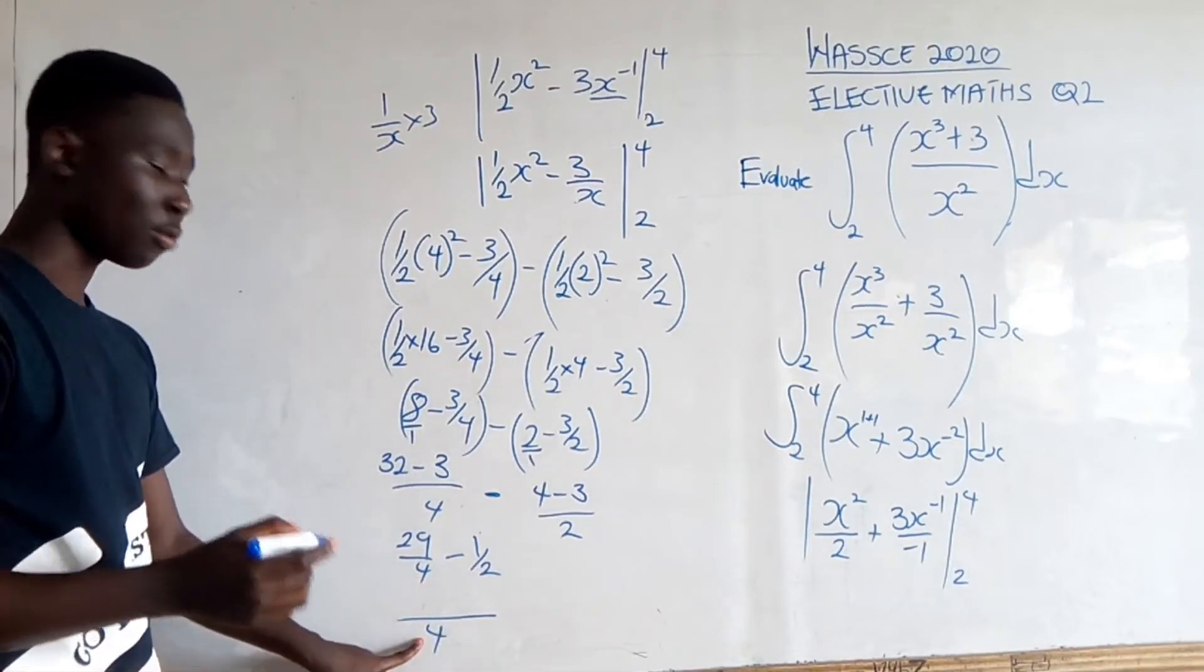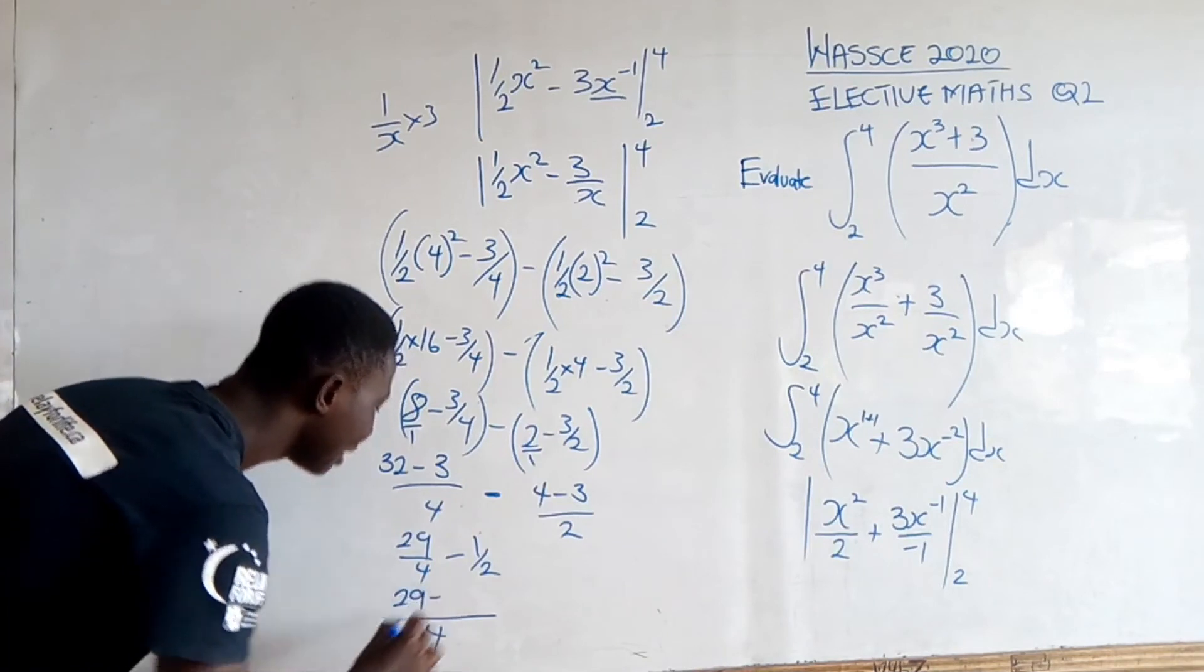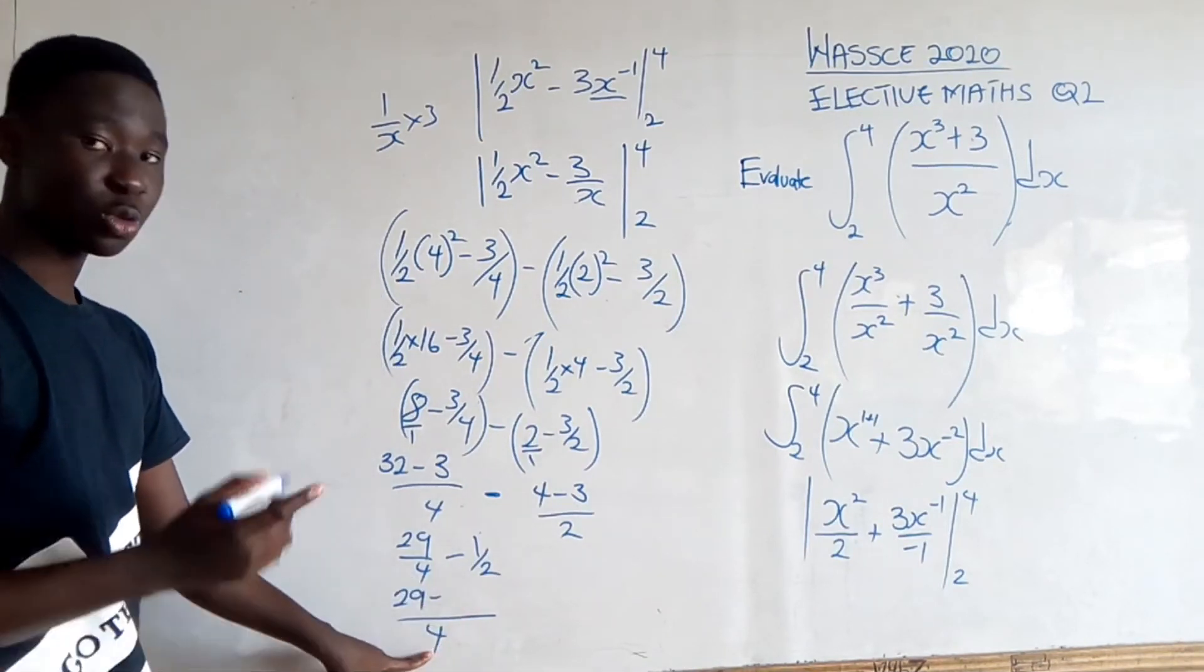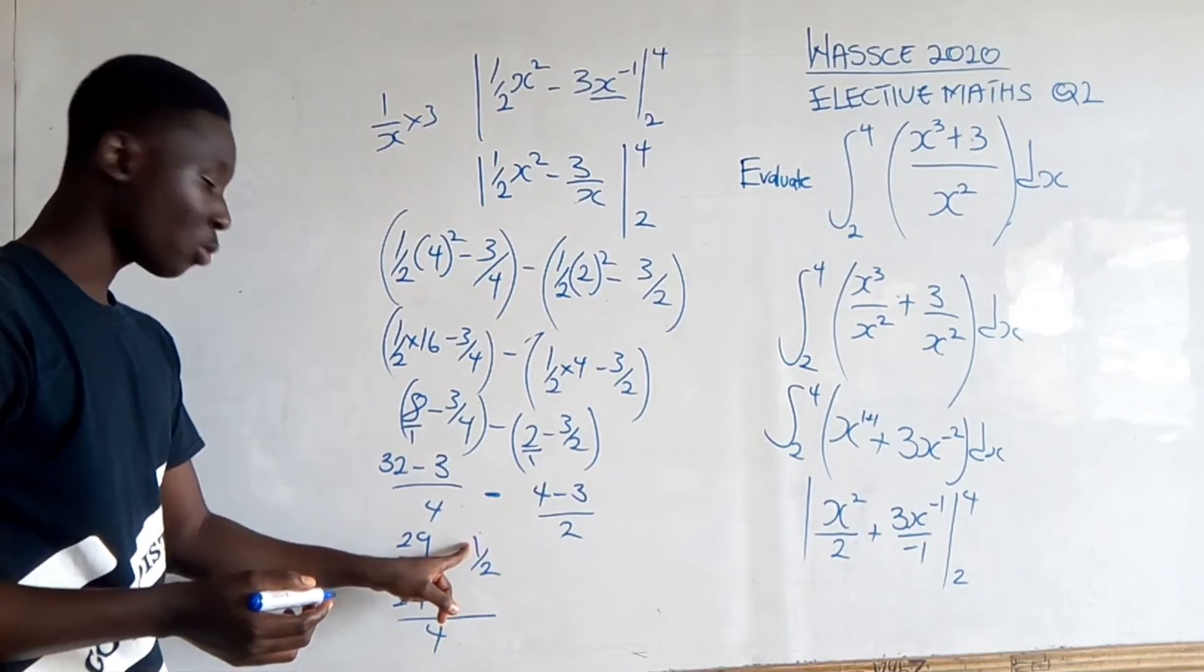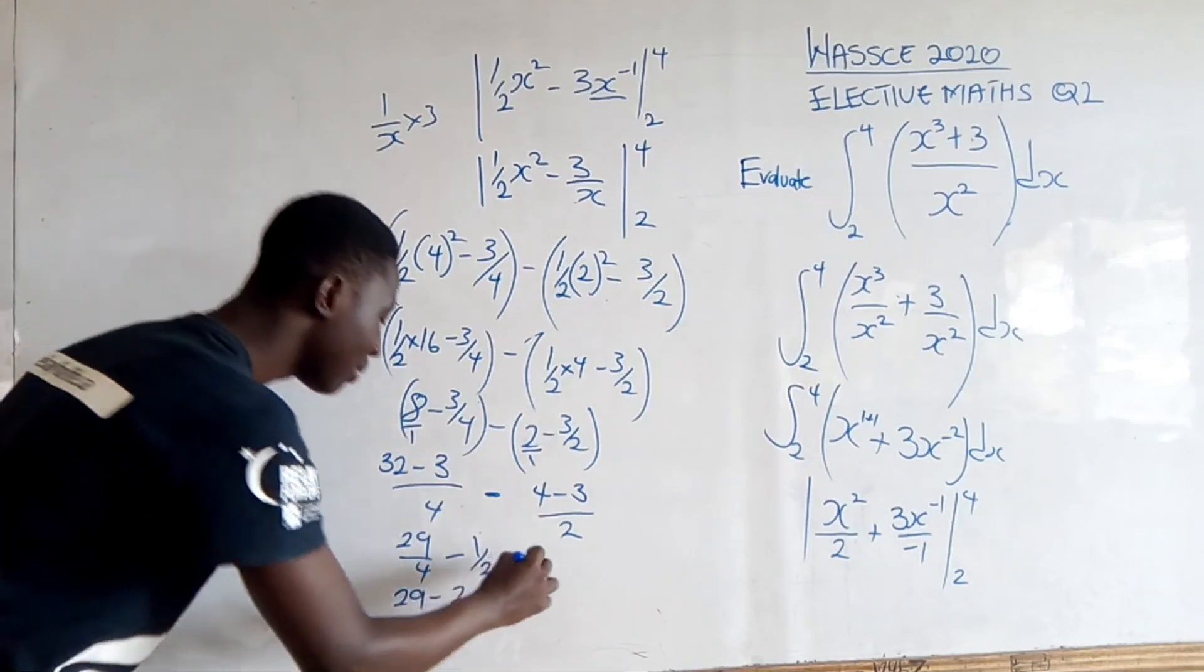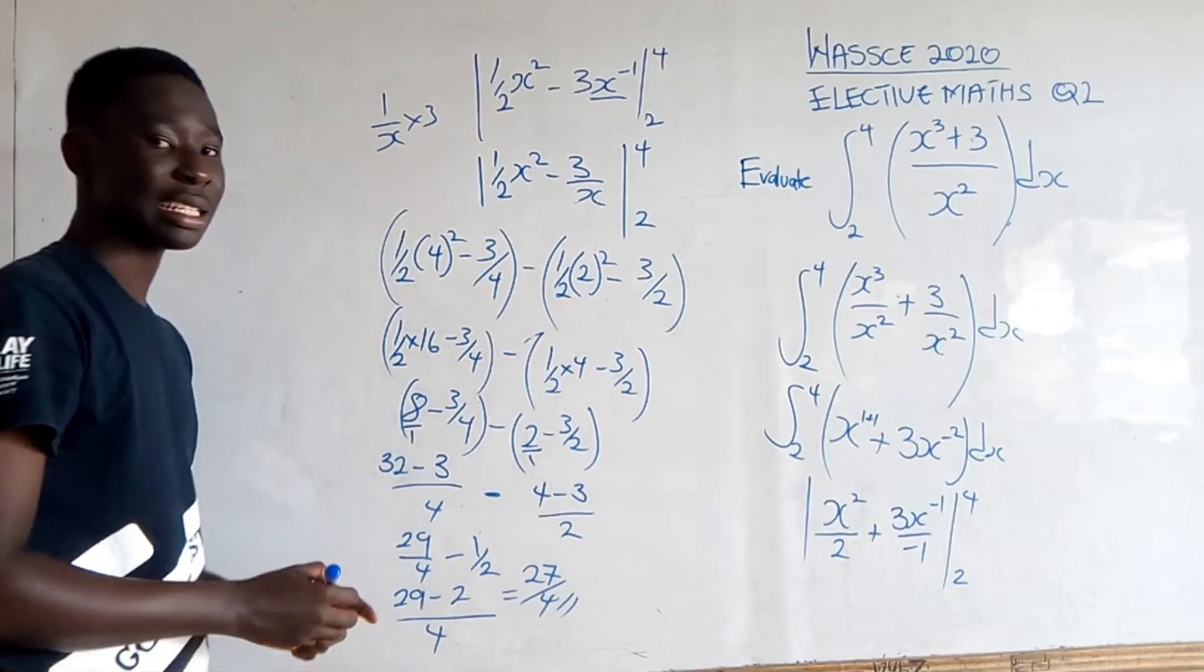4 goes into itself once, 1 times 29 is 29, minus 2 goes into 4 two times, 2 times 1 gives us 2. 29 minus 2 is 27 over 4, and this is your final answer.